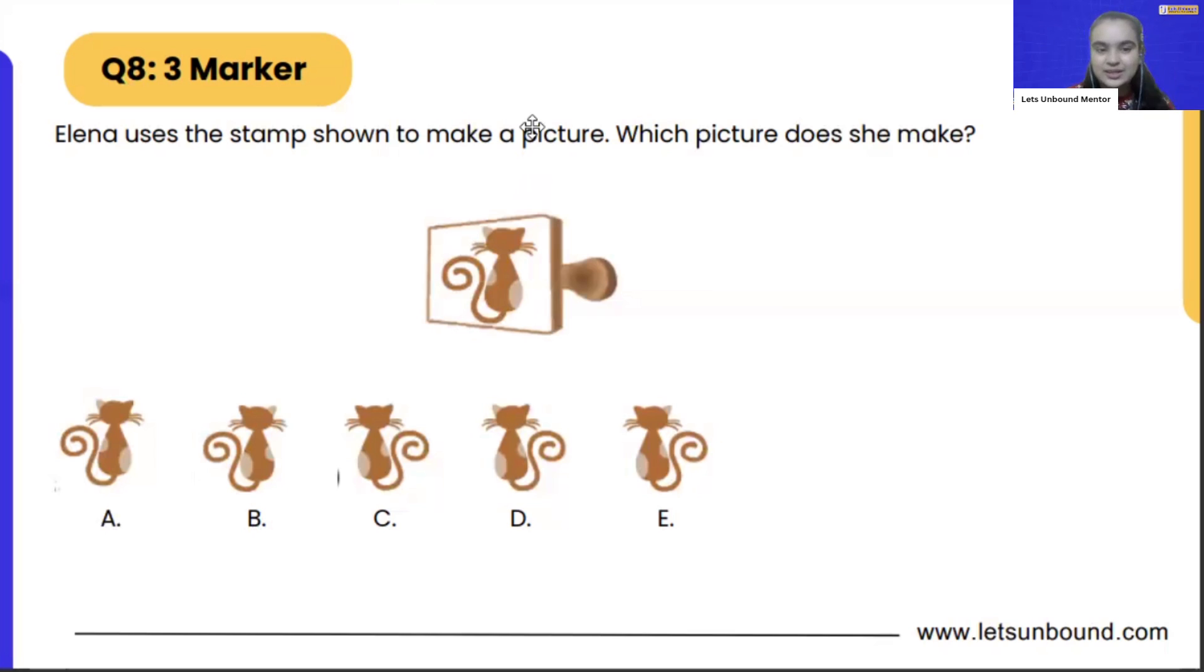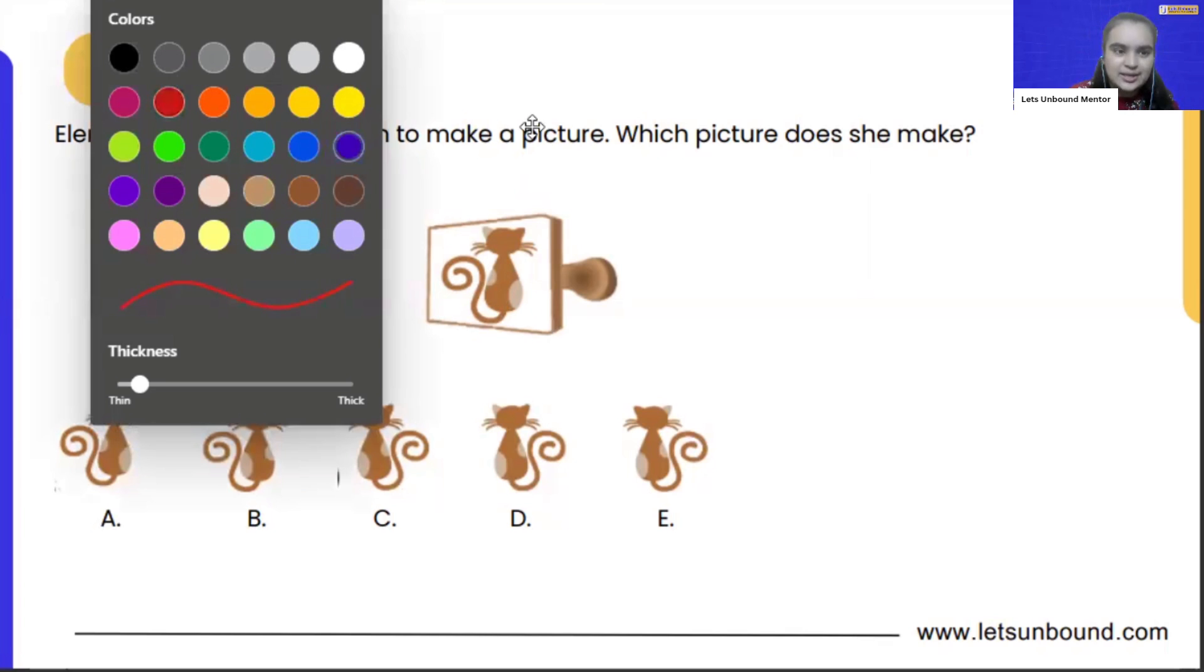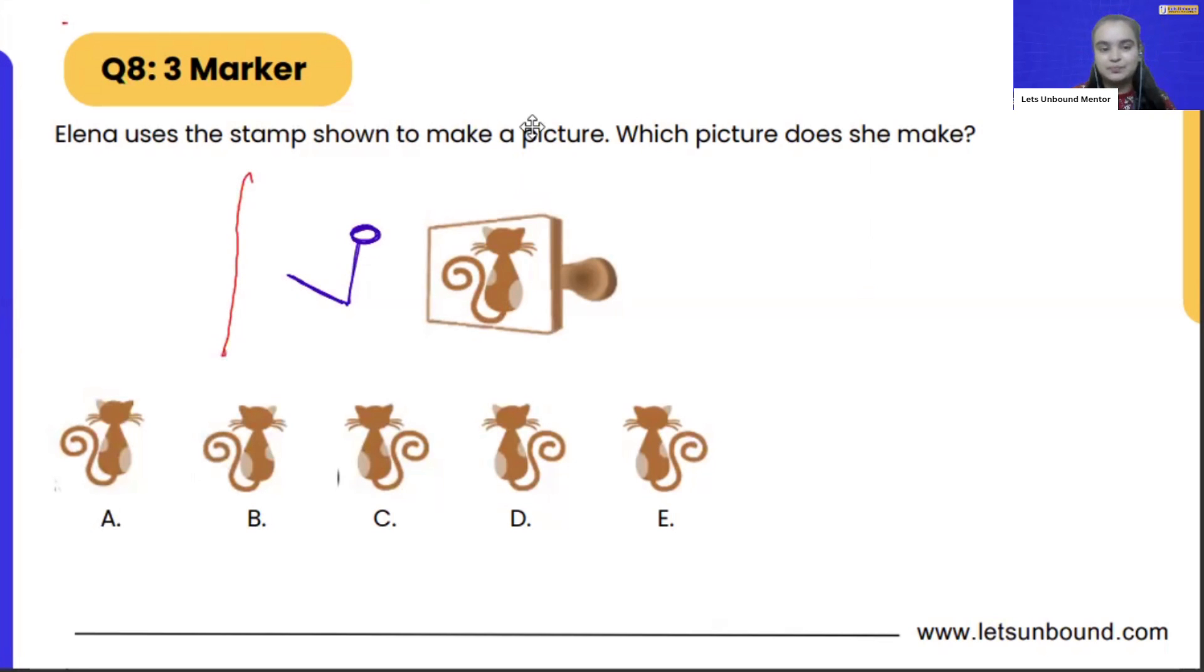The easy way to start with it is imagine this is the head, this is the body of the cat, and this is the tail. This is how the stamp is. Now if I ask you kids, how will the mirror image of this look like? Imagine this is mirror. So the mirror image of this will look like...